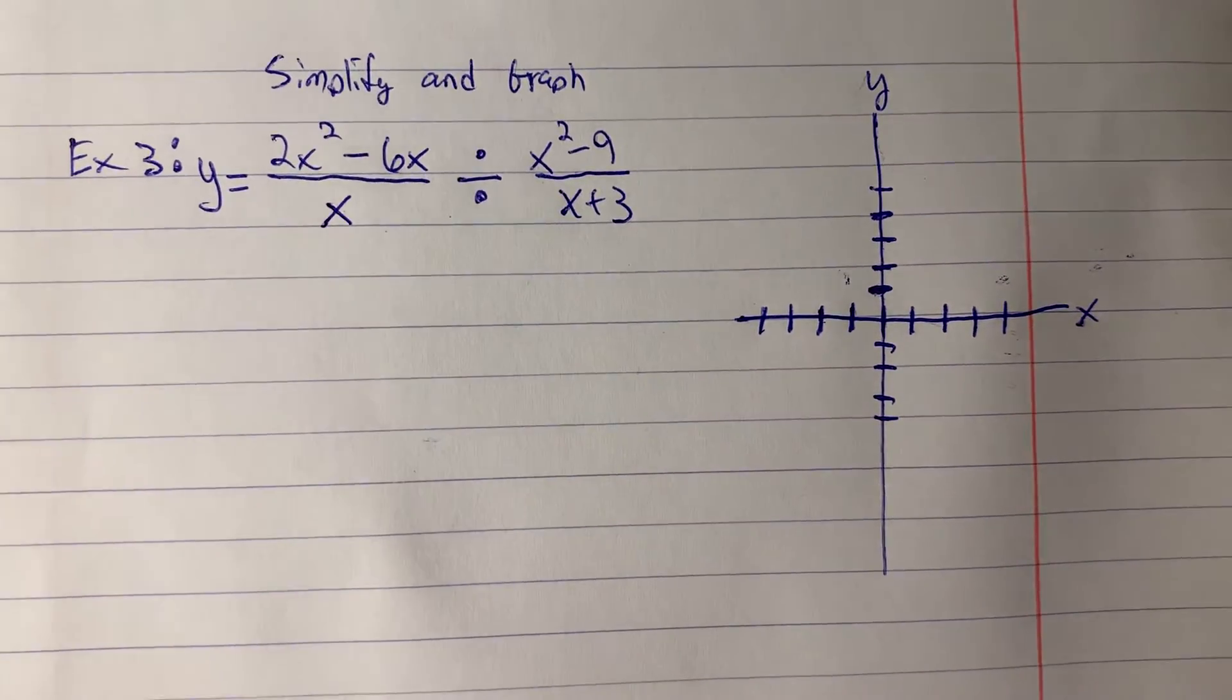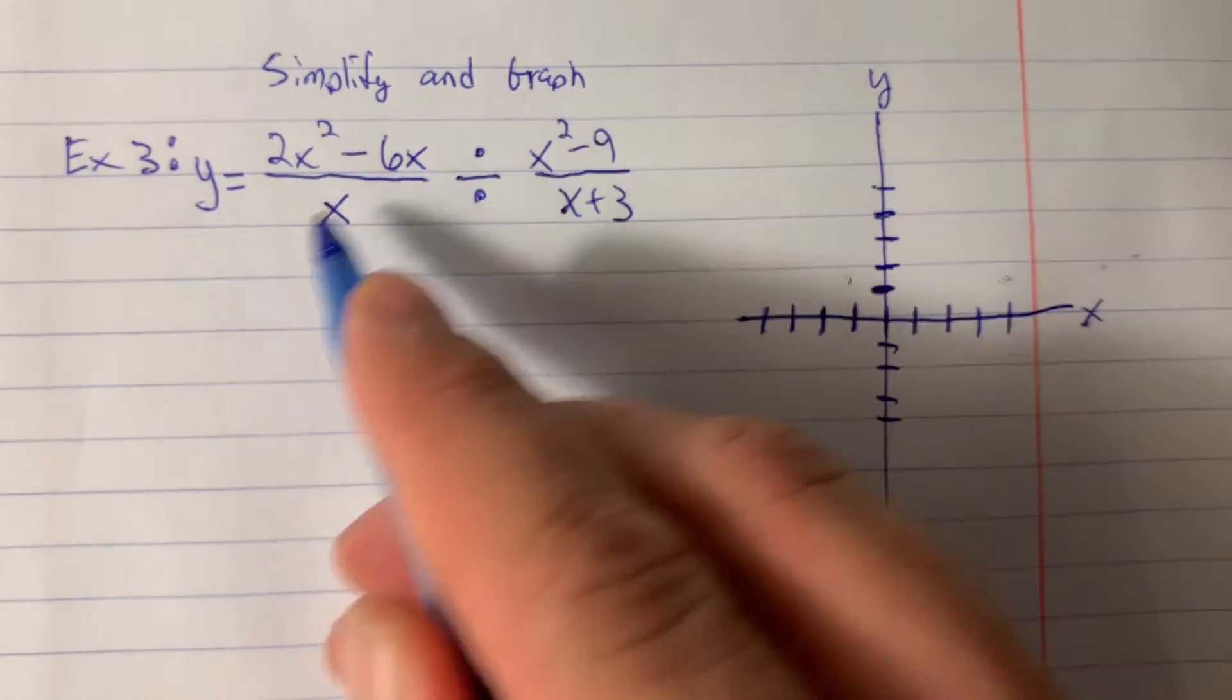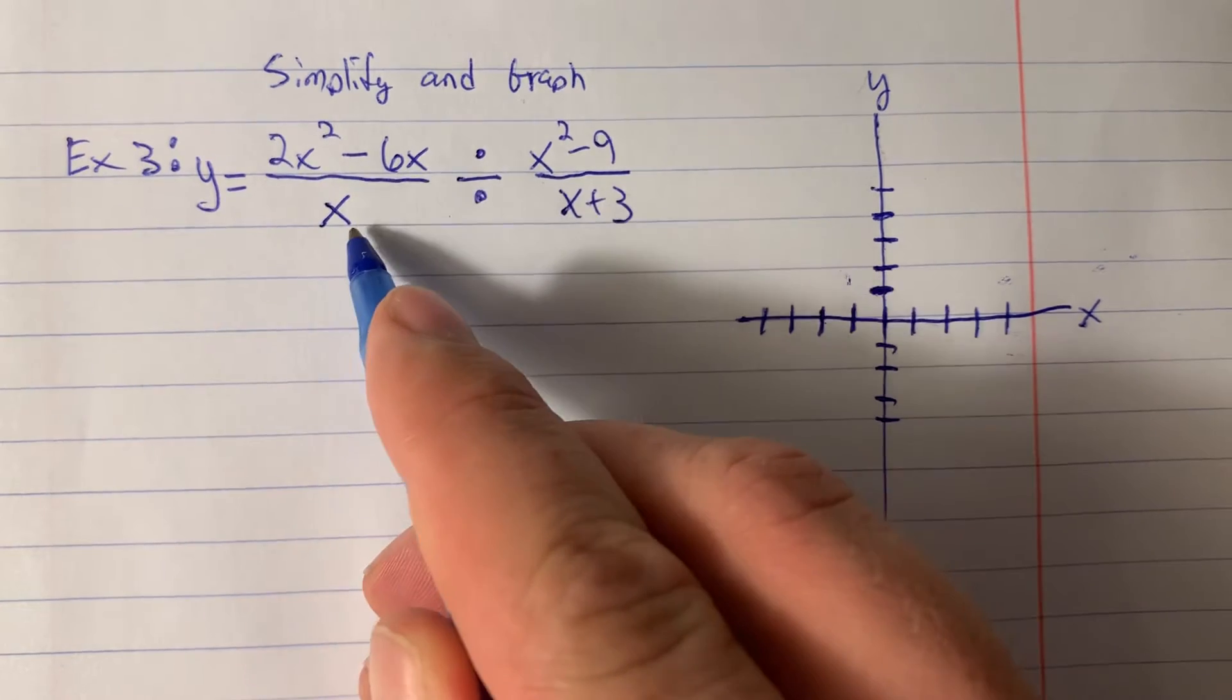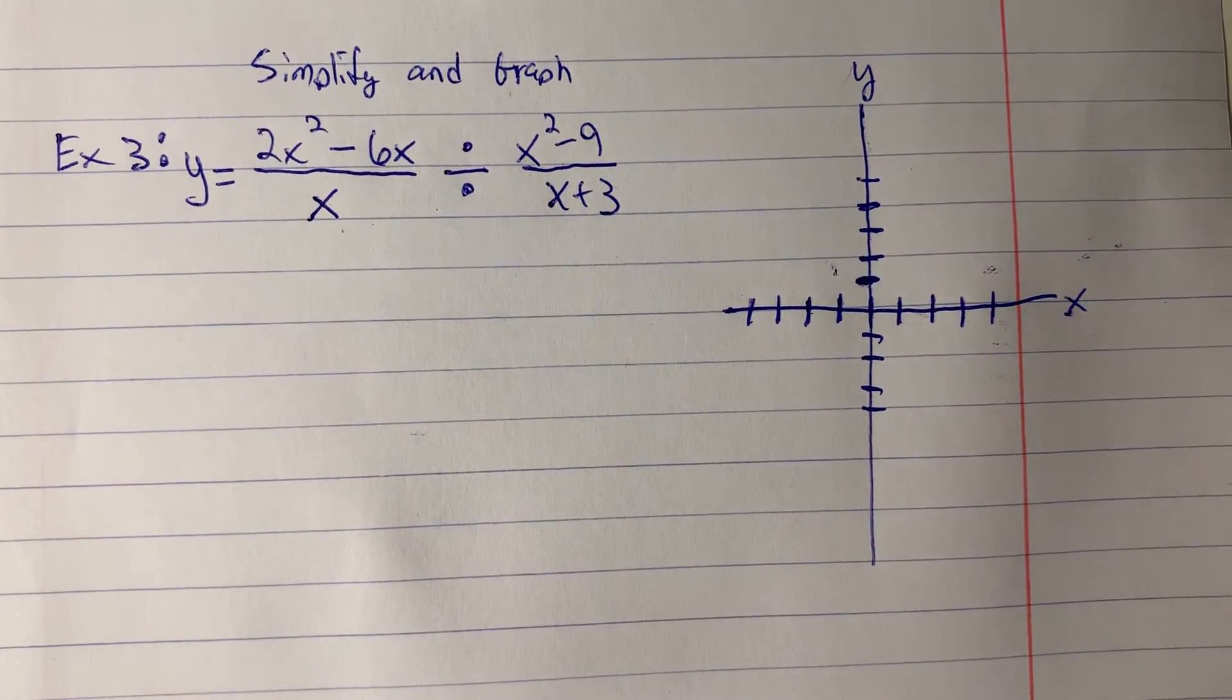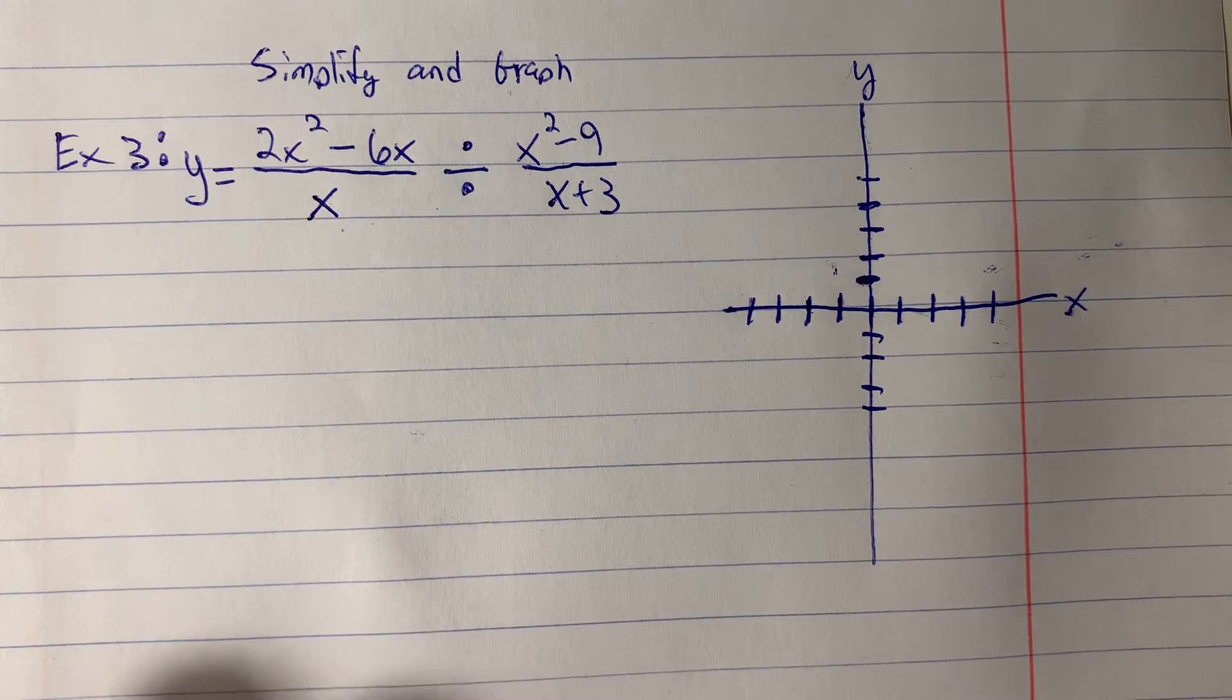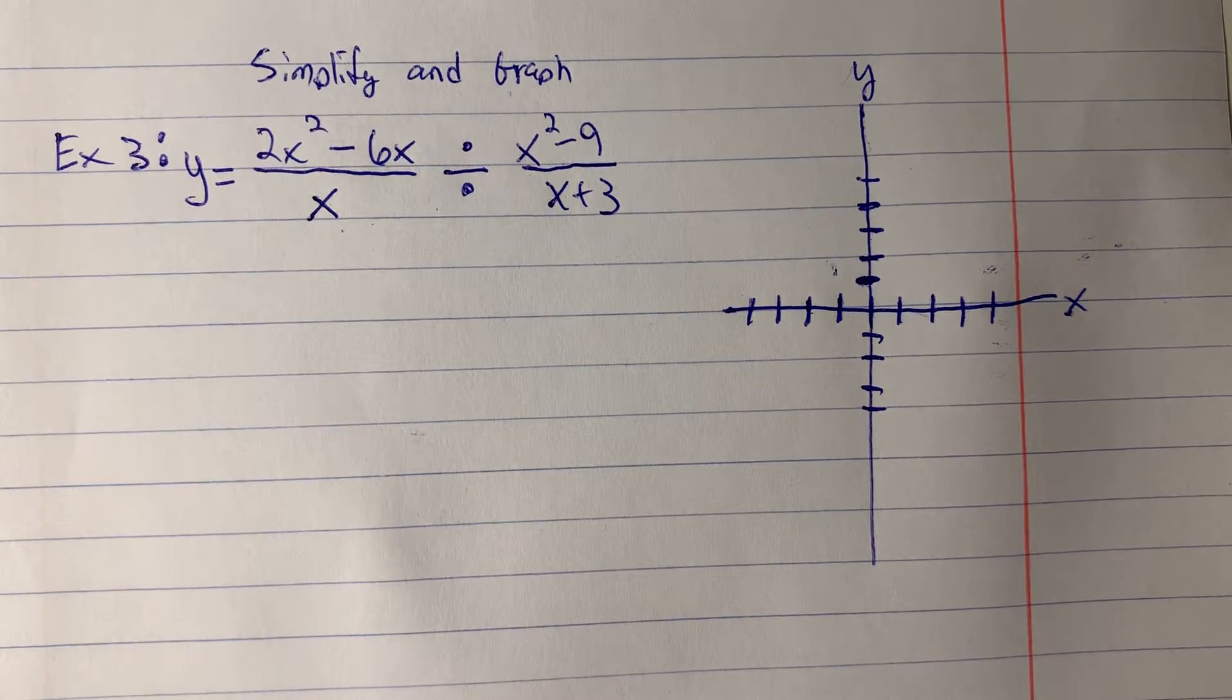In our last example, we are going to be simplifying and graphing y equals 2x squared minus 6x divided by x, divided by x squared minus 9 divided by x plus 3. And this looks crazy, but it's going to actually come out very nice.